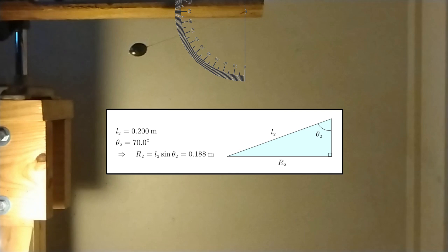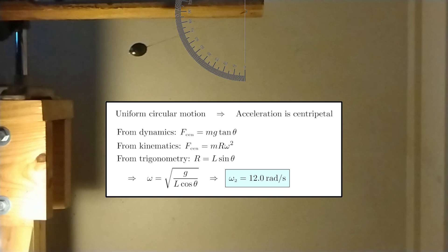Now, let us shorten the string length slowly down to 20 centimeters. We measure now an angle of 70 degrees, which implies that the radius of the circular motion is now 18.8 centimeters. Using the same formula as before, we conclude that the final angular velocity is 12 radians per second.